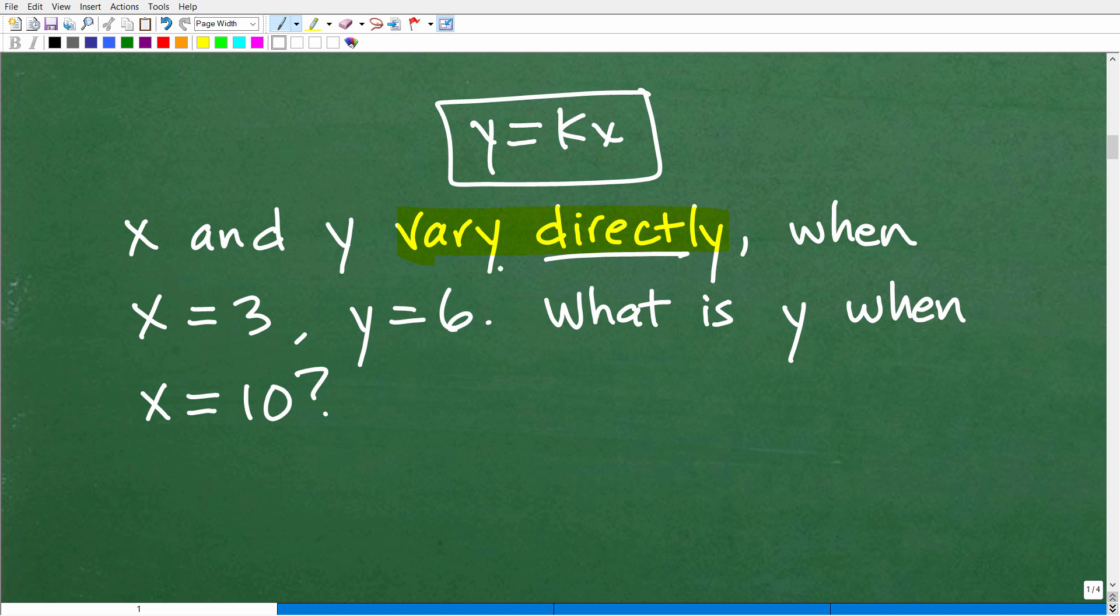So we're going to be needing the direct variation formula, not the inverse, the direct. So x and y vary directly when x is equal to 3, y is equal to 6. And this is really the secret to unlocking this problem. Okay, so we're already given a pair of numbers here, some sort of way to kind of define this relationship. So when x is equal to 3, y is equal to 6, this is enough information for us to solve for k. So what we're going to do is plug in 3 for x. And when we plug in 3 for x, we got y for 6.